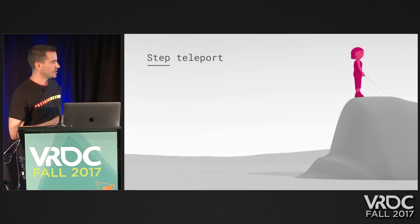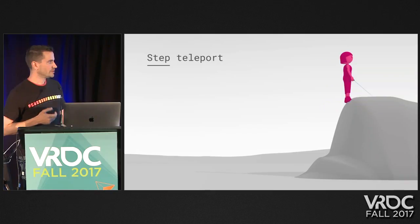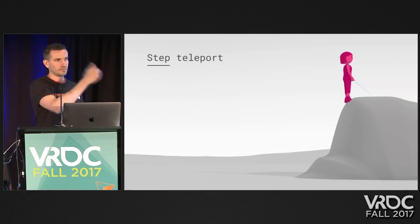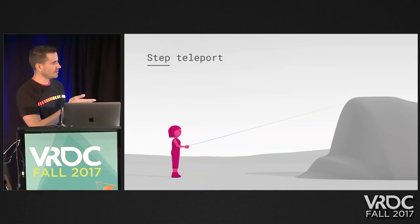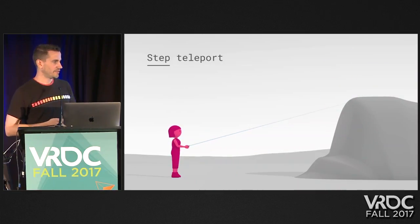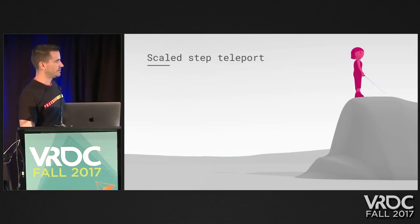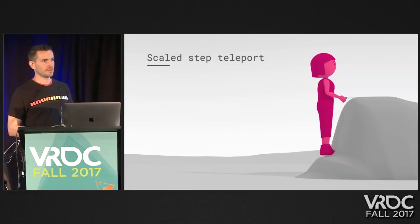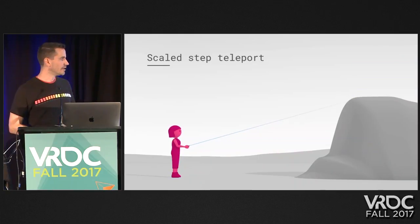To compensate for the loss of context with teleport, we tried step teleporting — incrementally getting the user closer. This worked okay but felt clunky and broke immersion. On the way to the top of a mountain, users ended up with their feet not on the ground, causing disorientation or fear of heights. So we kept their head in the same place and scaled them so that their feet were always on the ground. We thought people would get sick, but it actually worked really well.